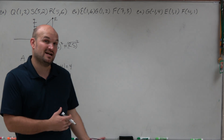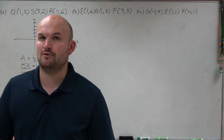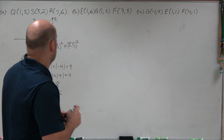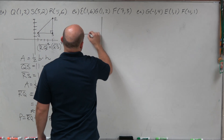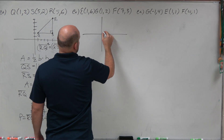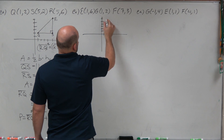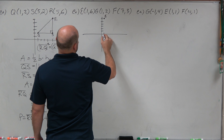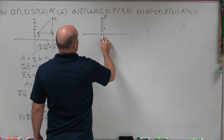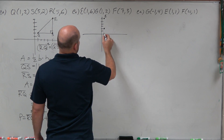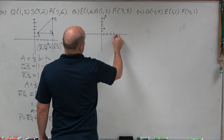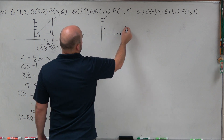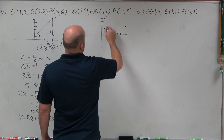So there you go, ladies and gentlemen — that is how you find the area as well as the perimeter. Now let's work into one that's maybe not as nice algebraically. In this one, we have E at (1, 6), G at (2, 2), and F at (7, 3).